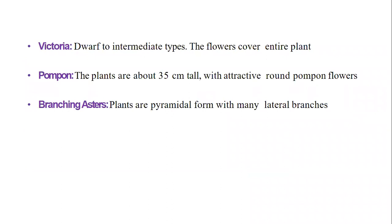Next form is Victoria — dwarf type, the flower covers entire plants. Next is Pompon — plants about 35 cm tall with attractive round pompon flowers. Next is Branching Asters — plants are pyramidal in form with many lateral branches. In the previous forms, branching is not lateral; they are erect with very less branching. But in branching asters they are having more lateral branches, forming a pyramid-like structure.